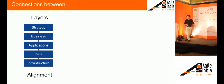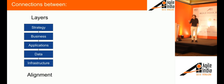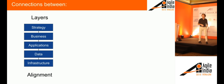If somebody shows me an architecture picture that has no lines, I basically tell them this is not an architecture. Because all the behavior, all the important part, is in the connections. If somebody doesn't show me any connections, this architecture picture is probably not very useful.